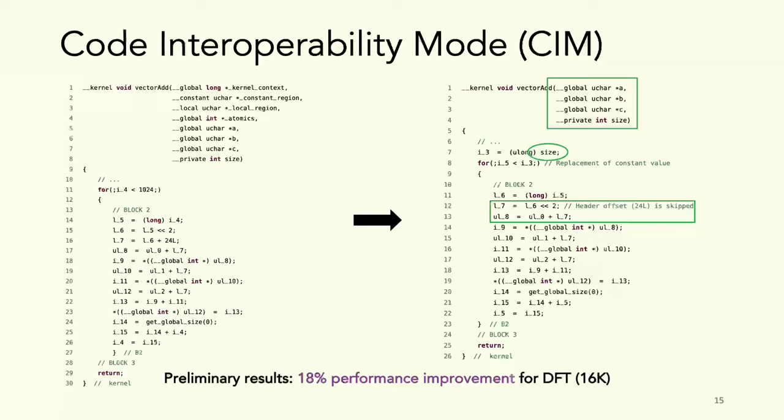Here I have a snippet showing the difference between the two modes. On the left side is the vector addition kernel from 0.14 without code interoperability mode. This kernel has eight parameters in the signature. On the right side is the kernel transferable to other programming languages and runtimes, which has the four parameters as in the functionally equivalent Java code.